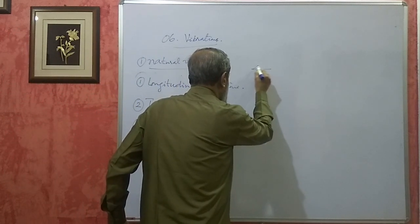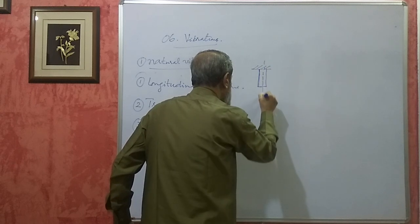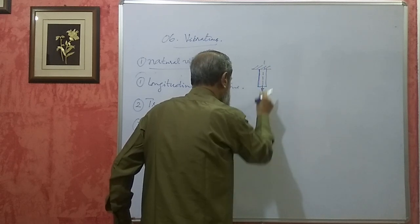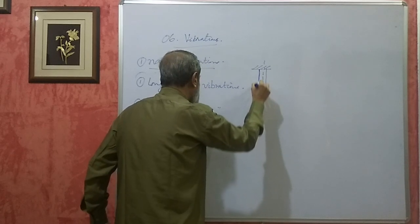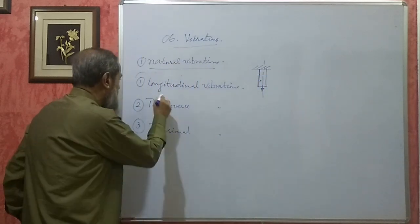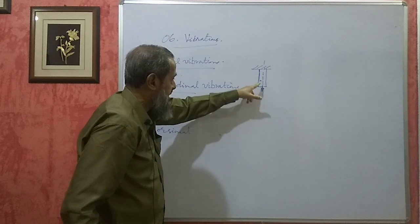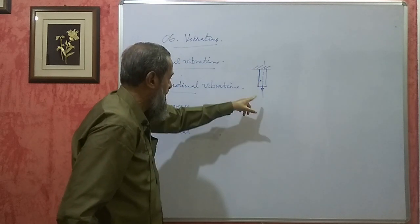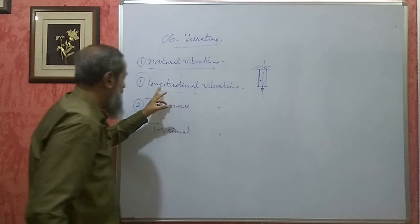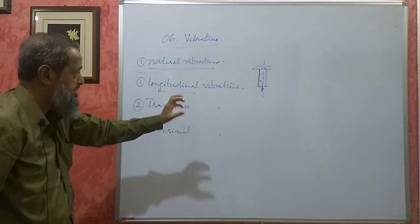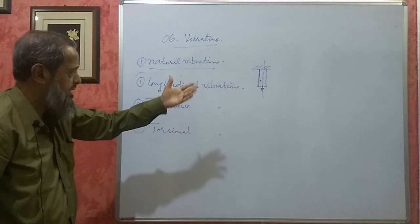In longitudinal vibration, if I apply a force along the axis of a body, pull it and leave it, the particles inside vibrate such that their motion is parallel to the axis of the body. A body under longitudinal vibration will alternately be subjected to tensile and compressive stresses.